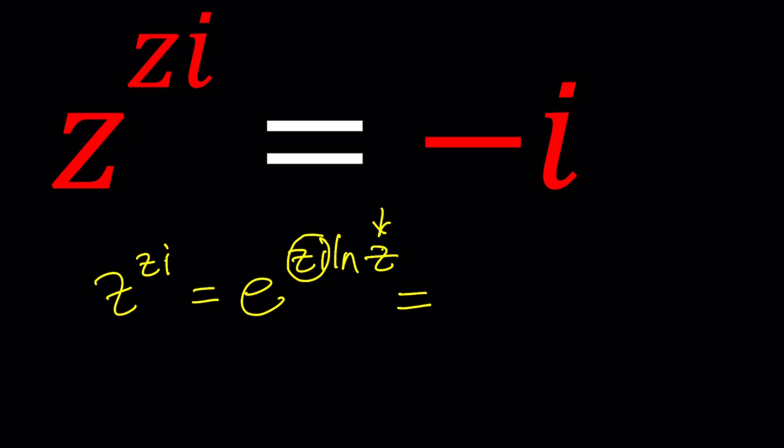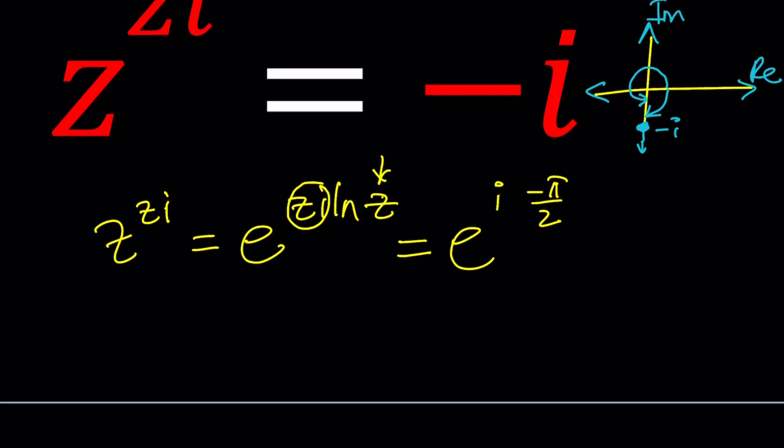Negative i can be written as e to the power i times negative π over 2. On the Argand plane, if you remember, negative i is going to appear here on the imaginary axis which is on the negative side. It's going to have an angle of 3π over 2, but if you want to use the principal argument, we should go with negative π over 2 because our principal argument needs to be between negative π and π so that it can be uniquely expressed.